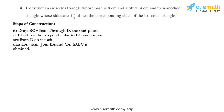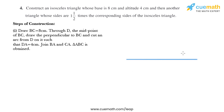Steps of construction: draw BC equal to 8 centimeters. Through D, the midpoint of BC, draw the perpendicular to BC and cut an arc from D on it such that DA equals 4 centimeters. Join BA and CA — triangle ABC is obtained. So let's draw BC equal to 8 centimeters — this is BC and it measures 8 centimeters.